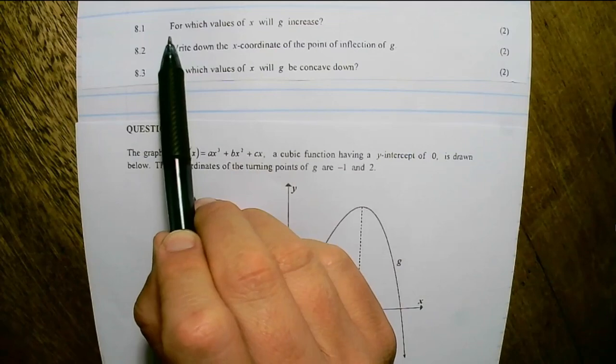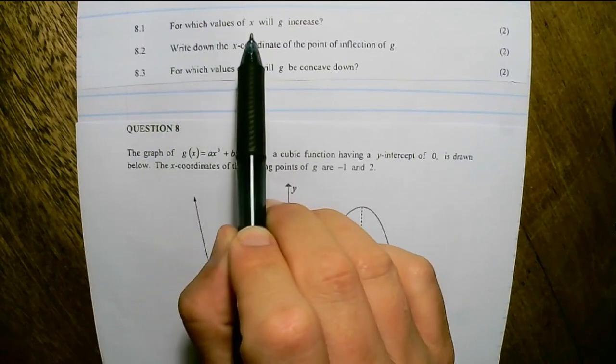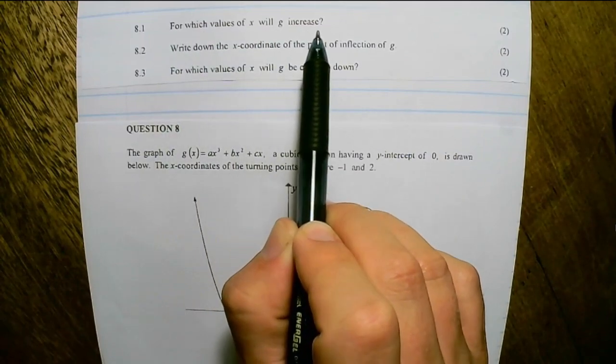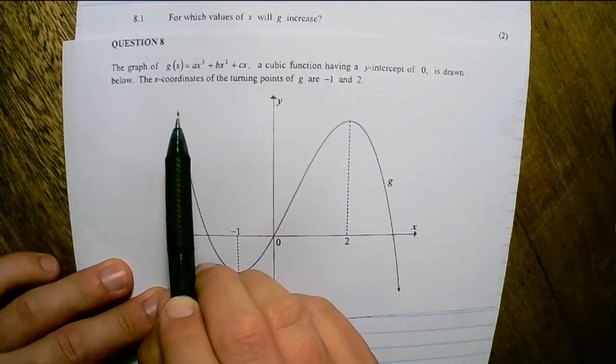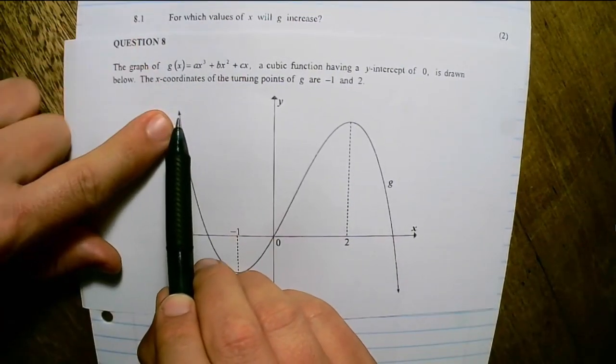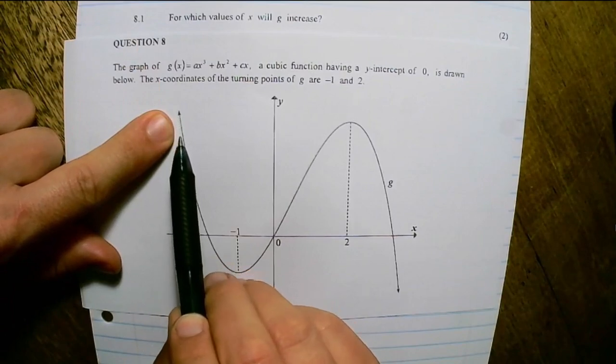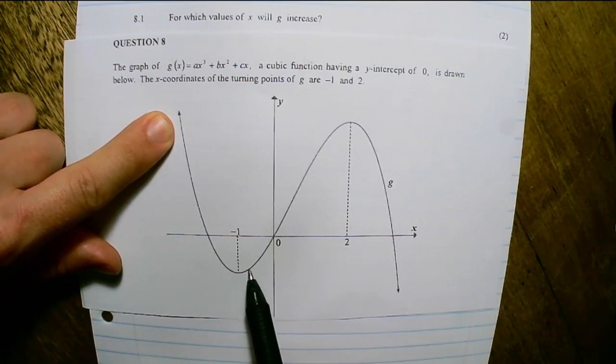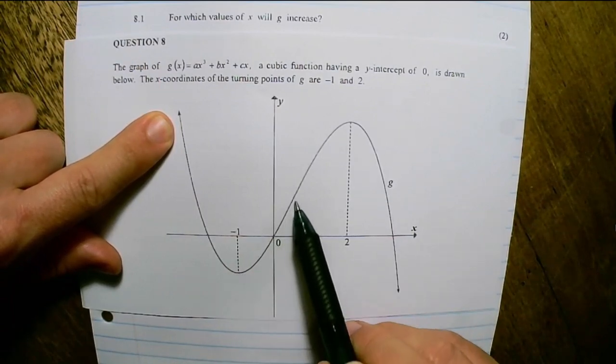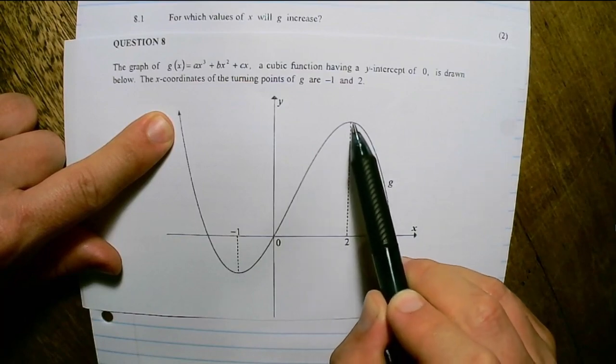The first question reads, for which values of x will g increase? Now if we look at the diagram and we start on the left, we can see we're moving downwards. So this is a decrease up until negative 1. And from negative 1, we are increasing or we're moving upwards up until we reach 2.